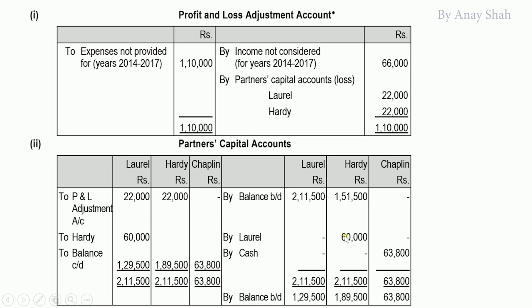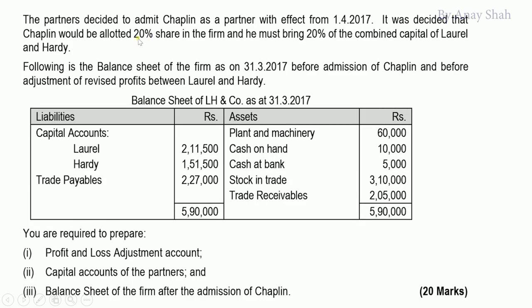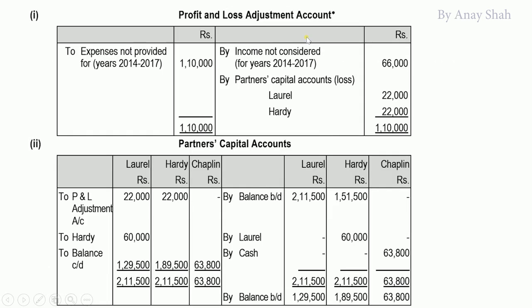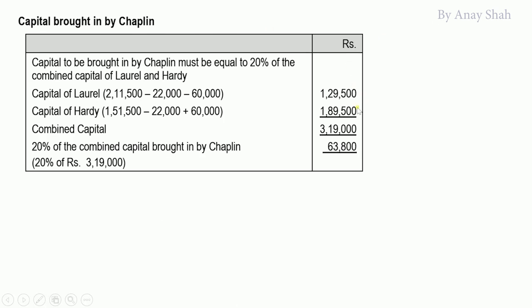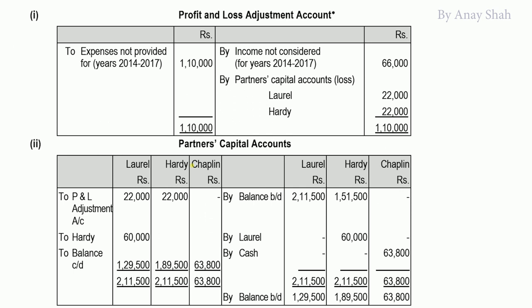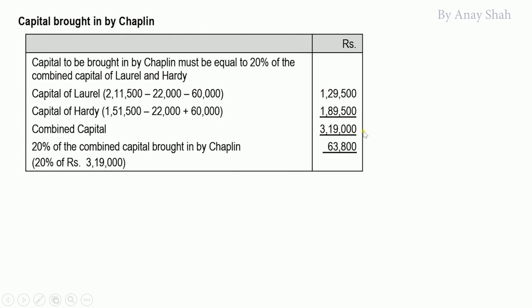After all adjustments, closing balances: L = 1,29,500 and H = 1,89,500. For new partner Chaplain's capital: his capital must be 20% of the combined capital of L and H. Combined capital = 1,29,500 + 1,89,500 = 3,19,000. 20% of 3,19,000 = 63,800. So Chaplain must bring in capital of 63,800.